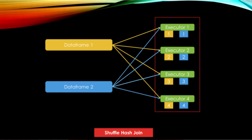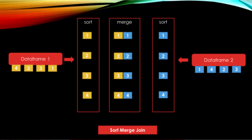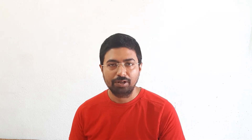Sort merge join, as the name suggests, consists of two steps. First step is sorting the data frames based on the key, and second step is the merging of sorted data into a single place by simply iterating over the elements and assembling the rows having the same value for the join key. This joining strategy is ideal for big size datasets on both sides where the data cannot be broadcasted. If the data cannot be broadcasted, the preferred way to do equi join is sort merge join.